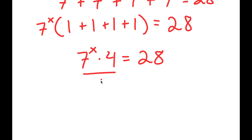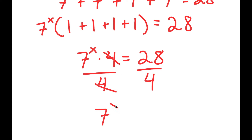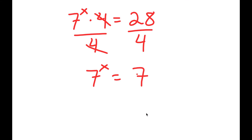Now if I divide both sides by 4, these two cancel out and I get 7 to the power of x is equal to 28 divided by 4, which is also 7. So I get 7 to the power of x is equal to 7, and obviously at first glance we get x is equal to 1.